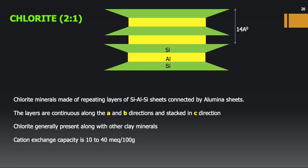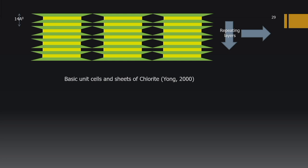Chlorite is made of silicon, aluminum, and silicon units with another aluminum layer in between, giving a thickness of about 14 angstroms. Chlorite is generally present alongside other clay minerals and has a cation exchange capacity of 10–14 meq/100g. Allophane consists of a random arrangement of silica tetrahedra and metallic ions — mostly aluminum — in octahedral coordination; it is identified by the absence of X-ray diffraction lines and exhibits very high activity.